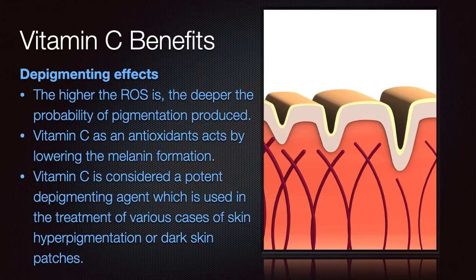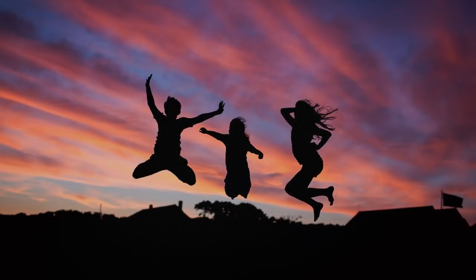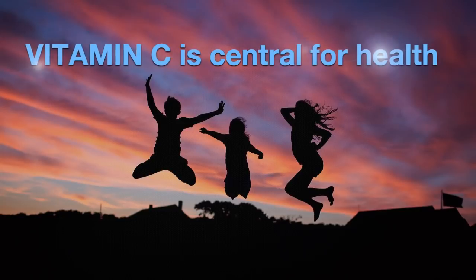Depigmenting benefits of vitamin C: the higher the ROS or reactive oxygen species, the greater the probability of pigmentation produced. Vitamin C acts as an antioxidant by lowering melanin formation in skin, making it a very potent depigmenting agent used in the treatment of various cases of skin hyperpigmentation or dark skin patches. In conclusion, vitamin C is central for health.